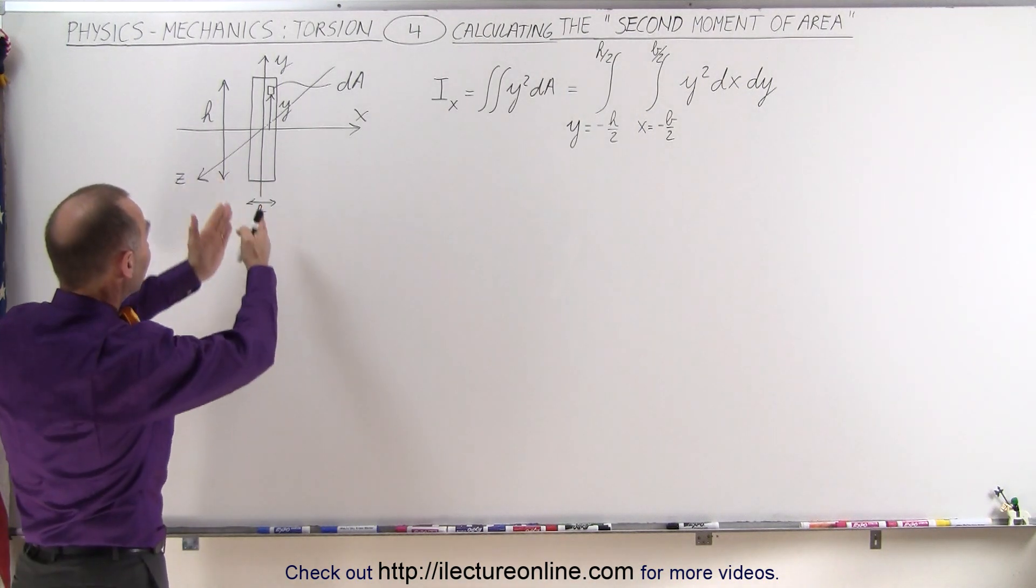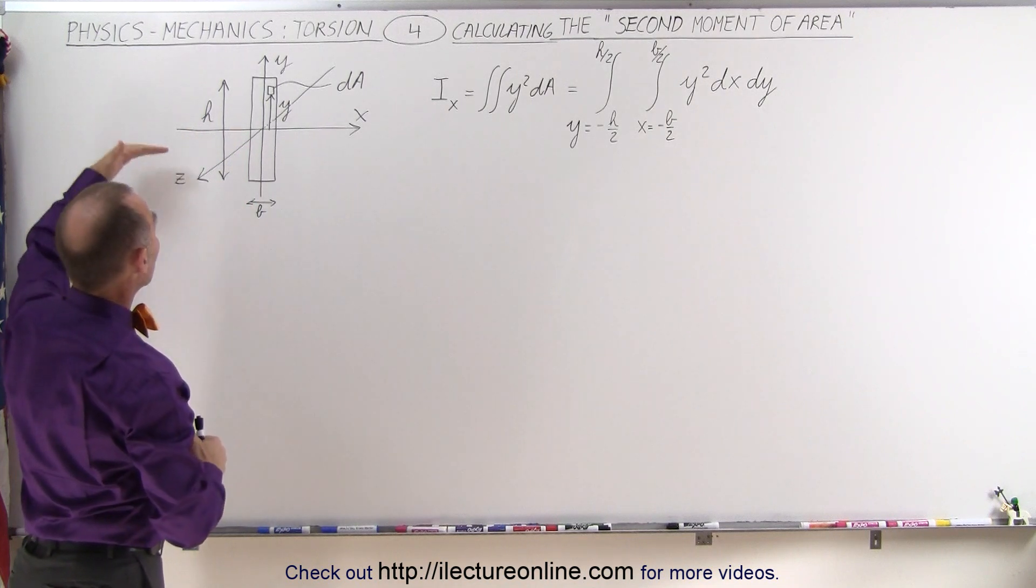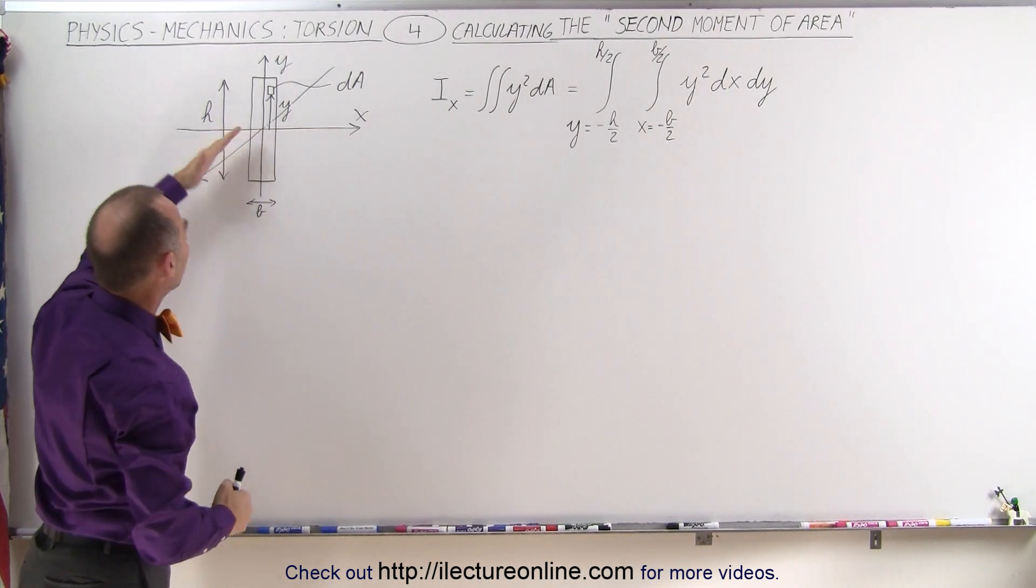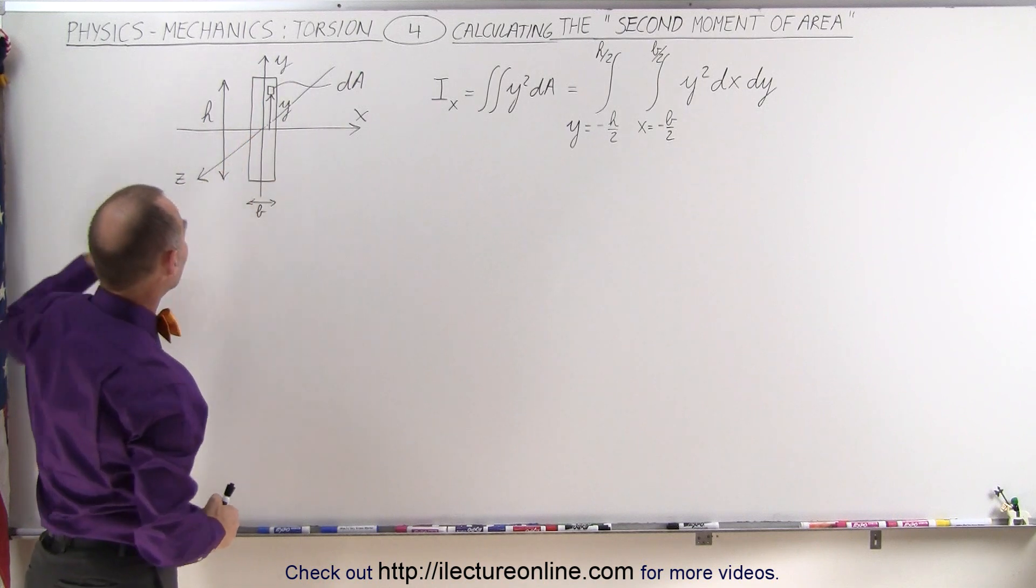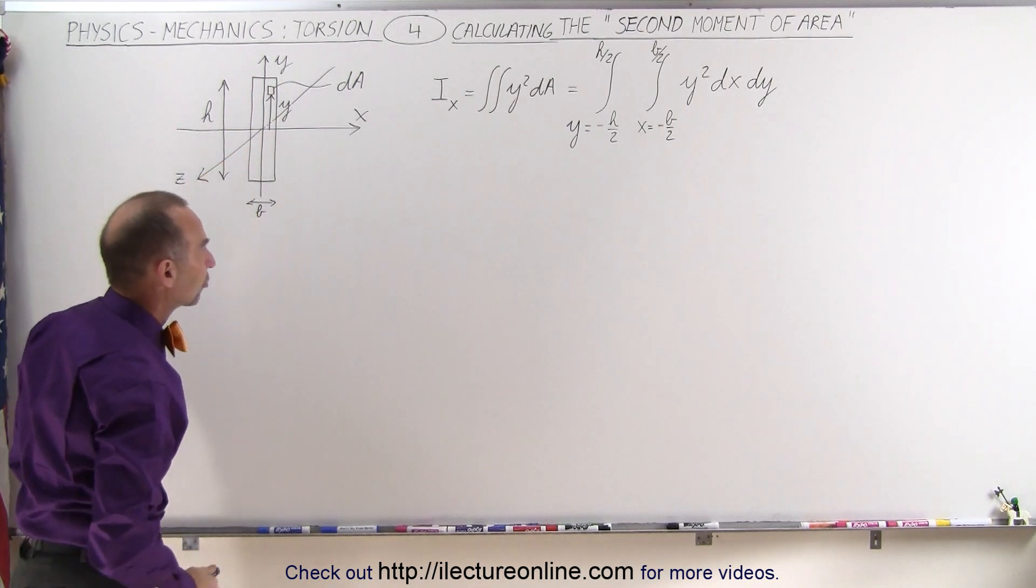So here we have a beam that's sitting on its edge. We've drawn three axes. We have the x-axis going this way, the y-axis going this way, and the z-axis going perpendicular through the cross-section.